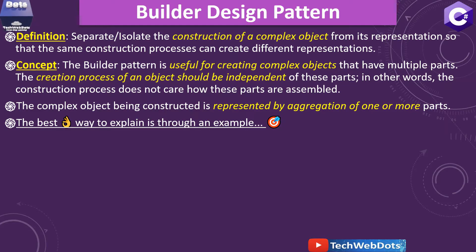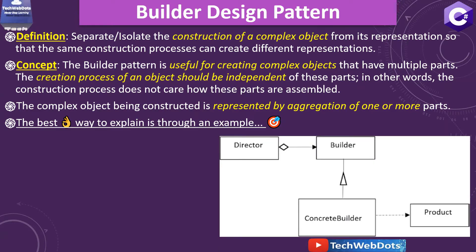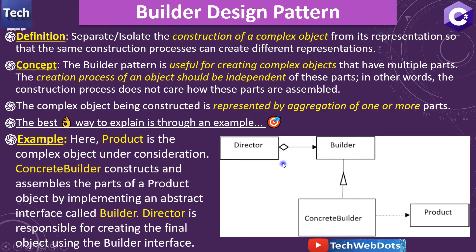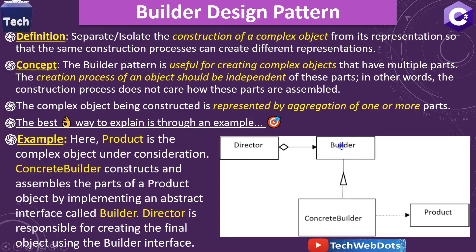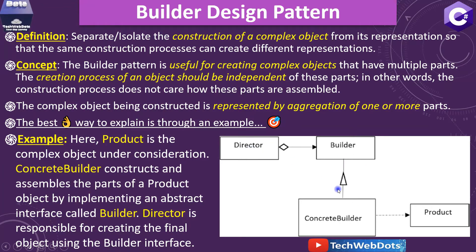The best way is to explain it through an example. Here we have a product which is the complex object under consideration — this is our final product. There is a concrete builder which inherits all the parts from the builder. The director is responsible for creating the final object using the builder interface. The director class uses the builder interface, and the concrete builder implements it, and is also responsible for generating the end product.